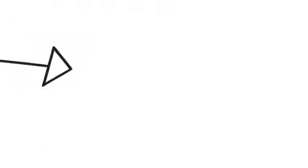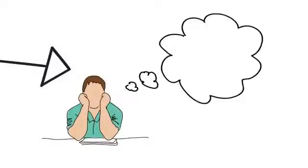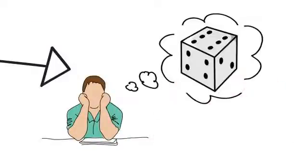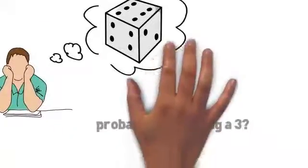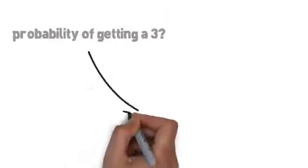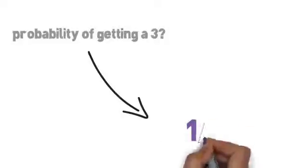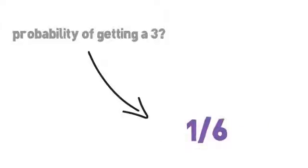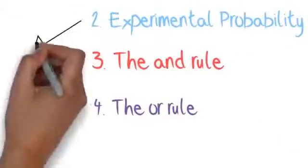Simple probability — if you take the simplest example, for instance a dice with 6 faces labelled 1 to 6, what is the probability of getting a 3 when rolled? 3 only appears once on the dice, therefore the probability of getting a 3 when you roll the dice is 1 out of 6.